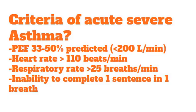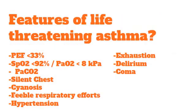The criteria for acute severe asthma are: peak expiratory flow rate (PEFR) between 30 to 50 percent of predicted — that is less than 200 liters per minute — heart rate more than 110 beats per minute, respiratory rate more than 25 breaths per minute, and the patient being so dyspneic that they cannot complete a sentence in one breath. If these are present, the patient is having an acute severe asthma attack.